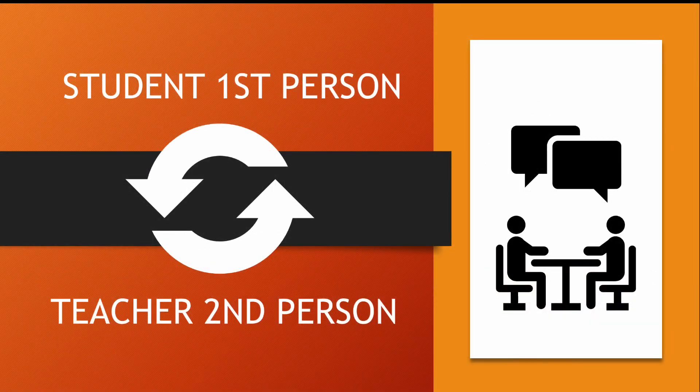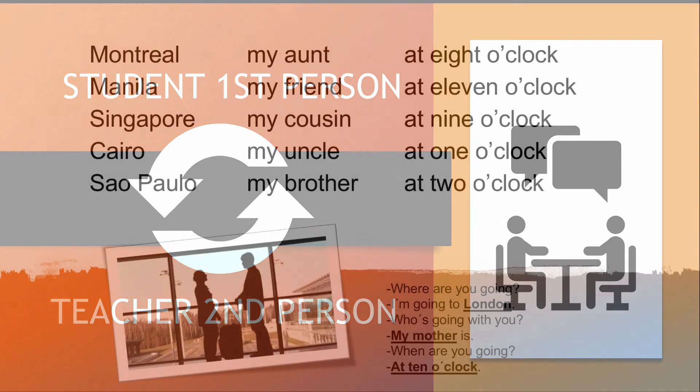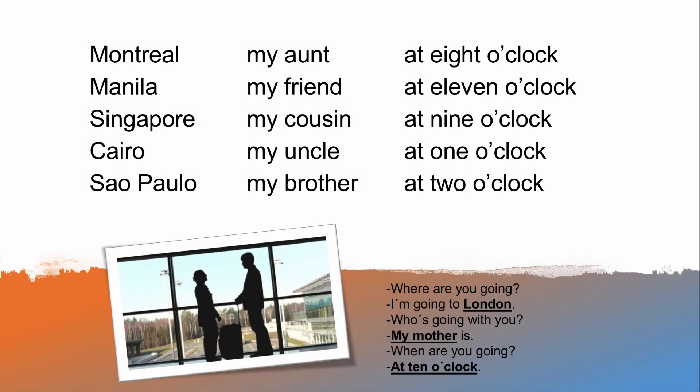Now switch. Student first person, teacher second person. One, two, three. I'm going to Montreal. My aunt is. At 8 o'clock.